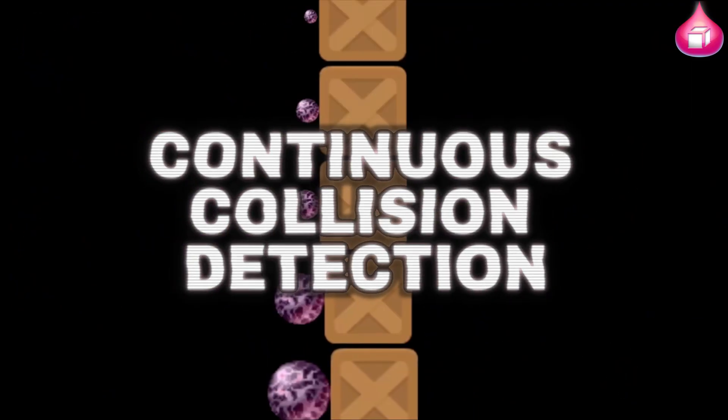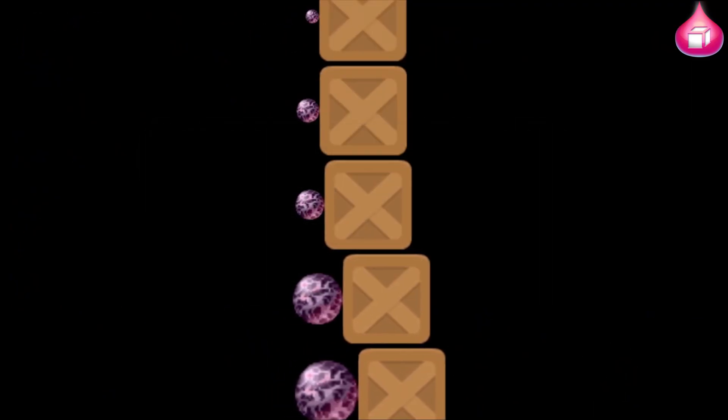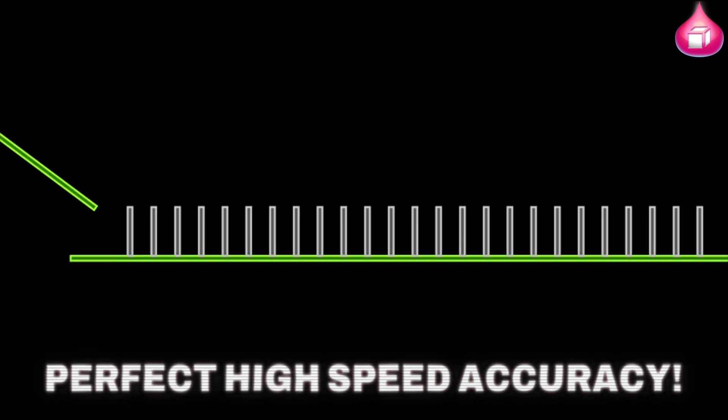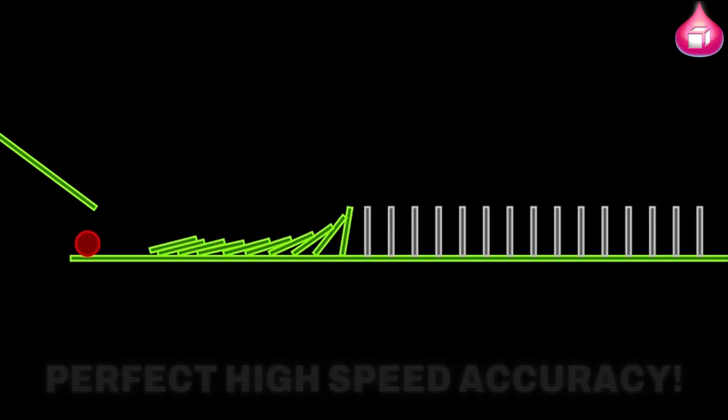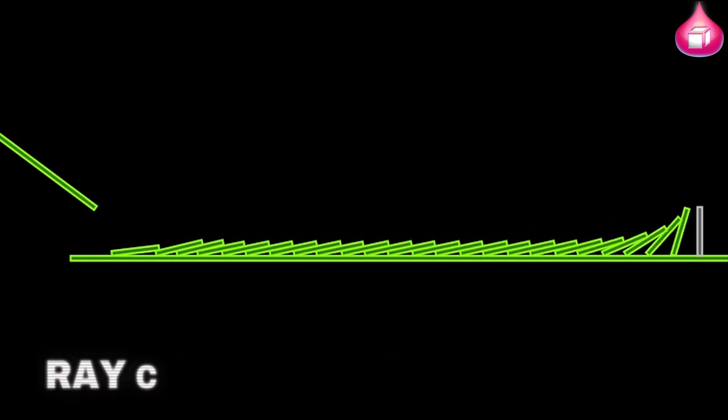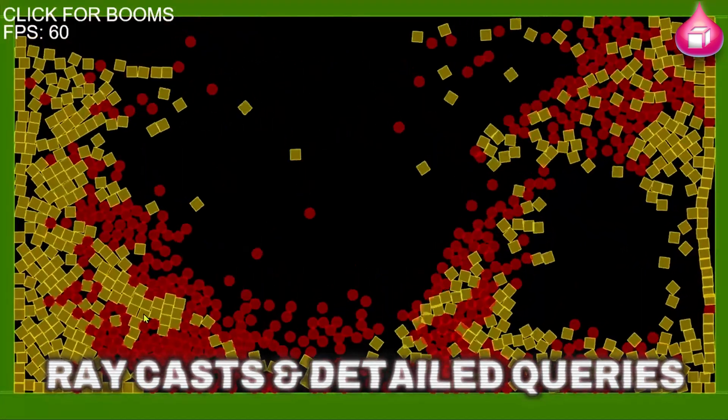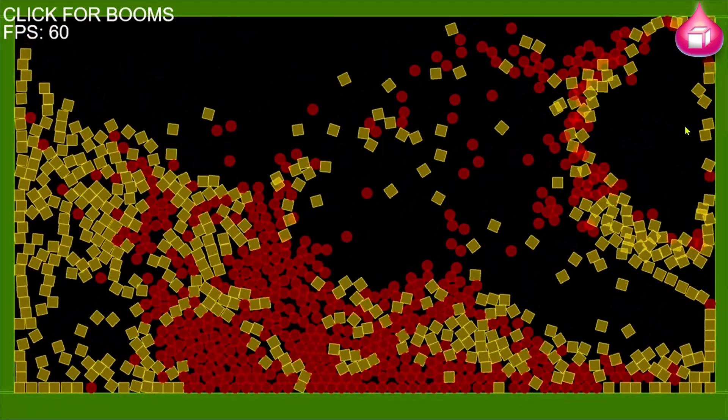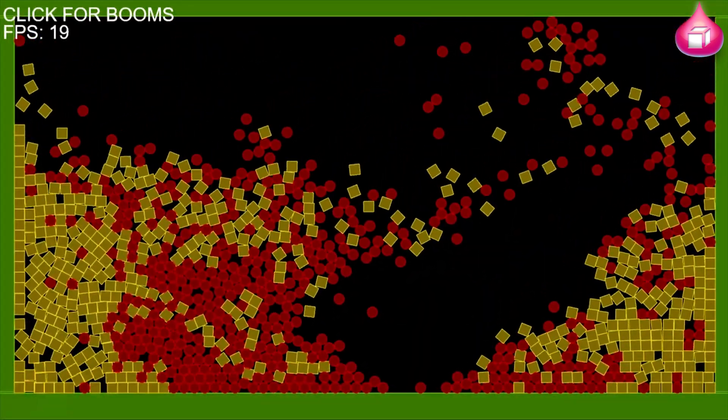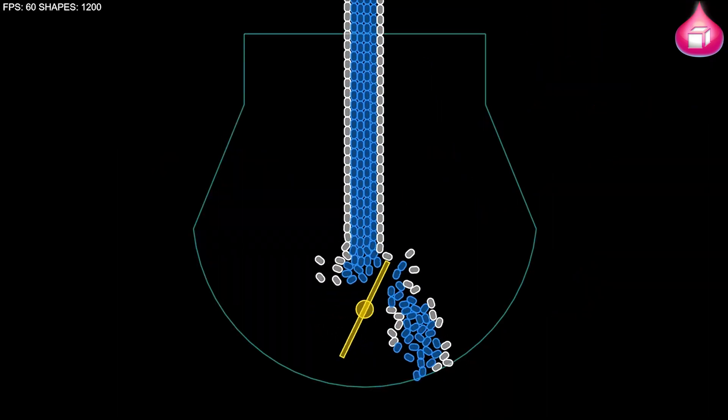This ensures high-velocity objects don't just slip past each other, but register every collision possible. Combined with raycasts and detailed queries, this gives developers fine-grained control over how every interaction in the physics world behaves.